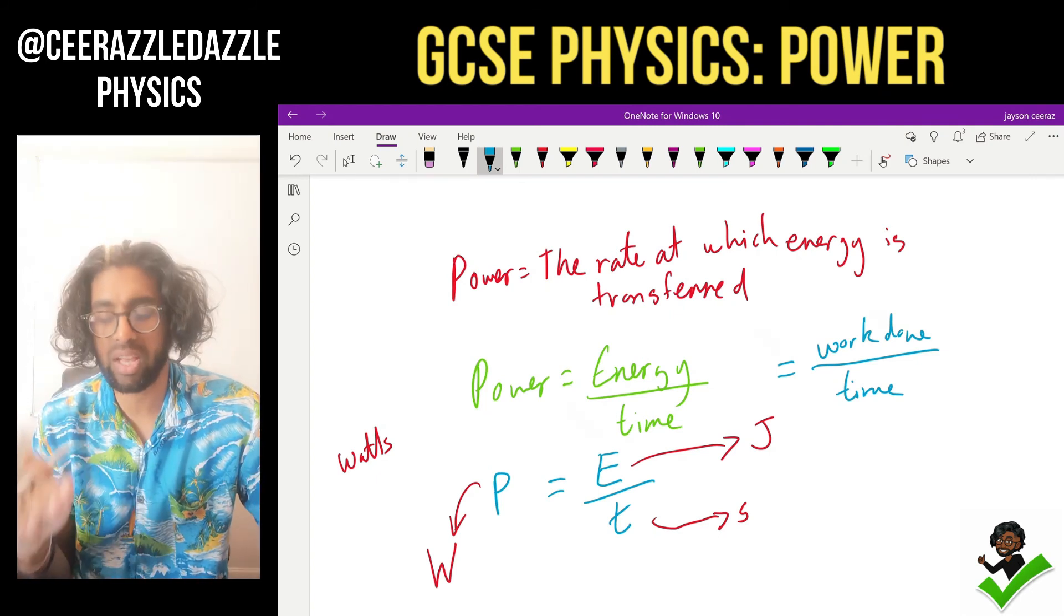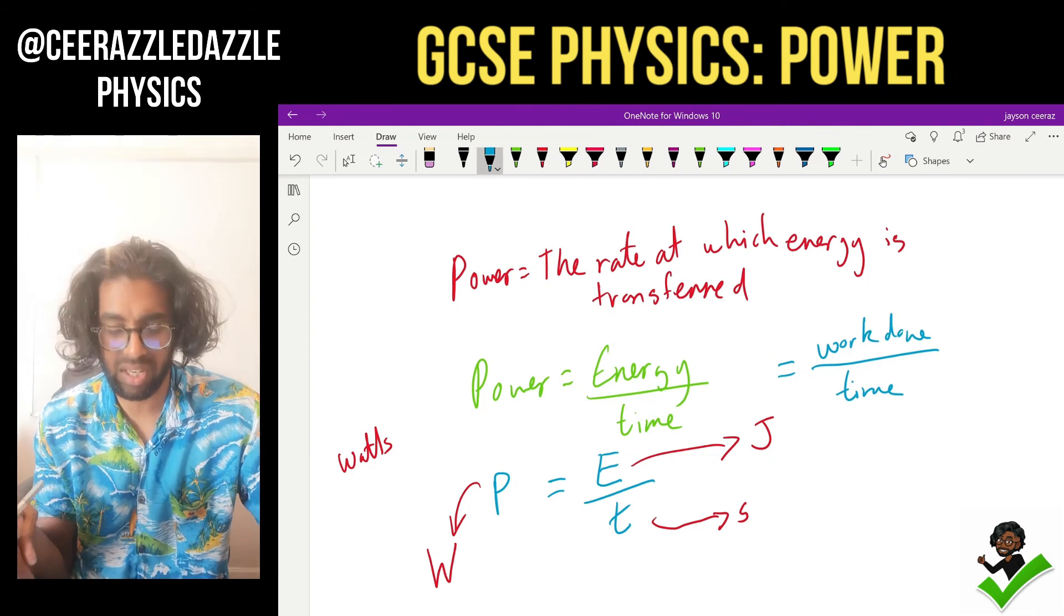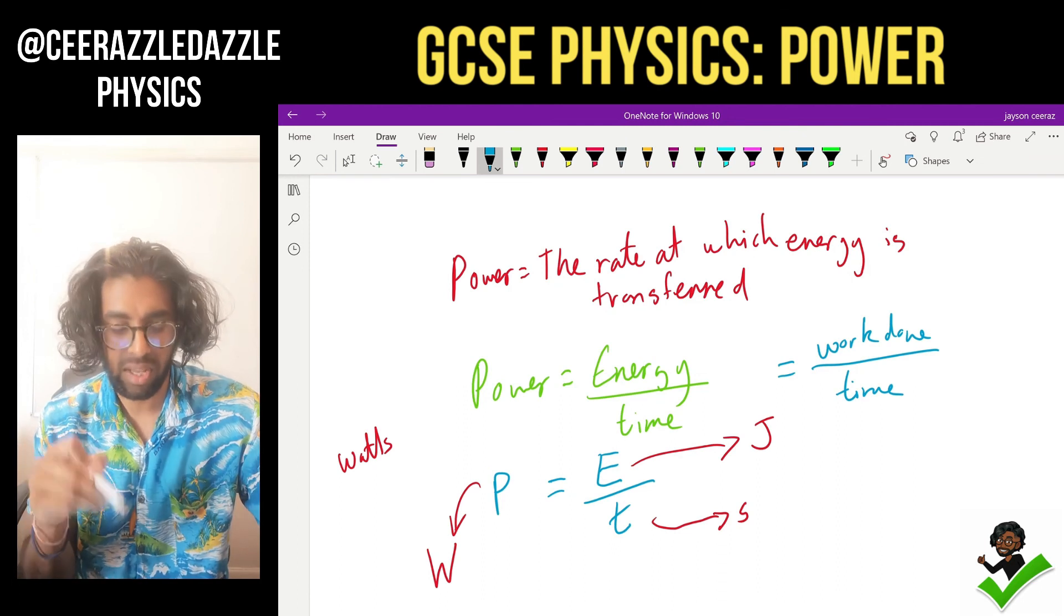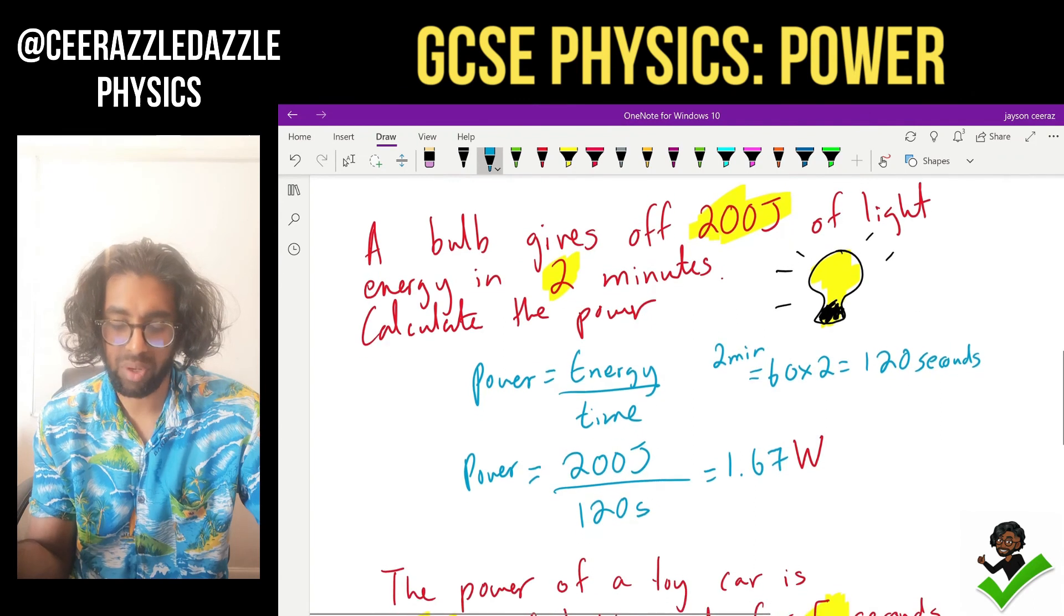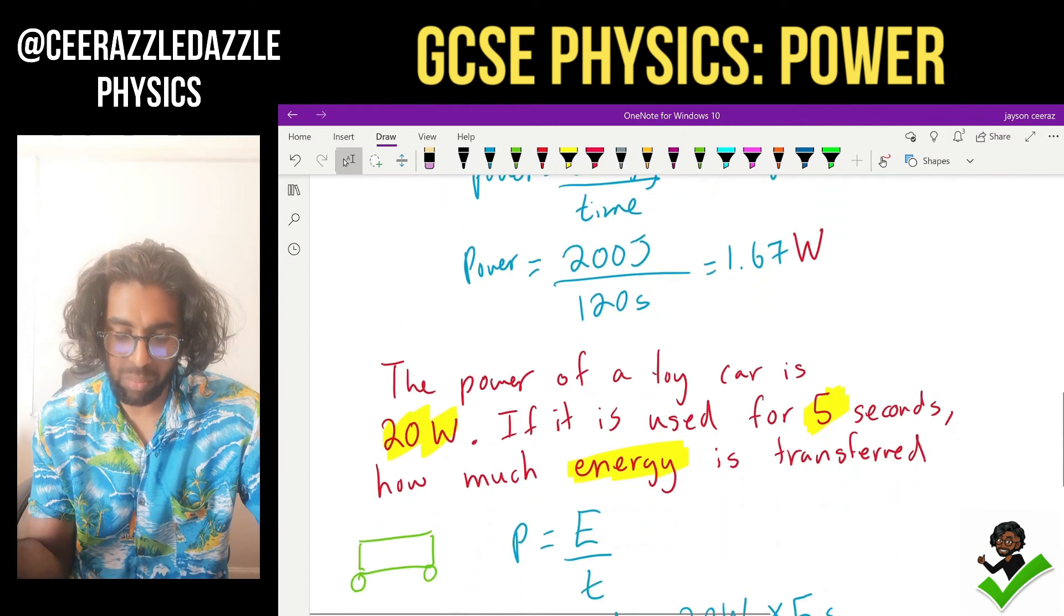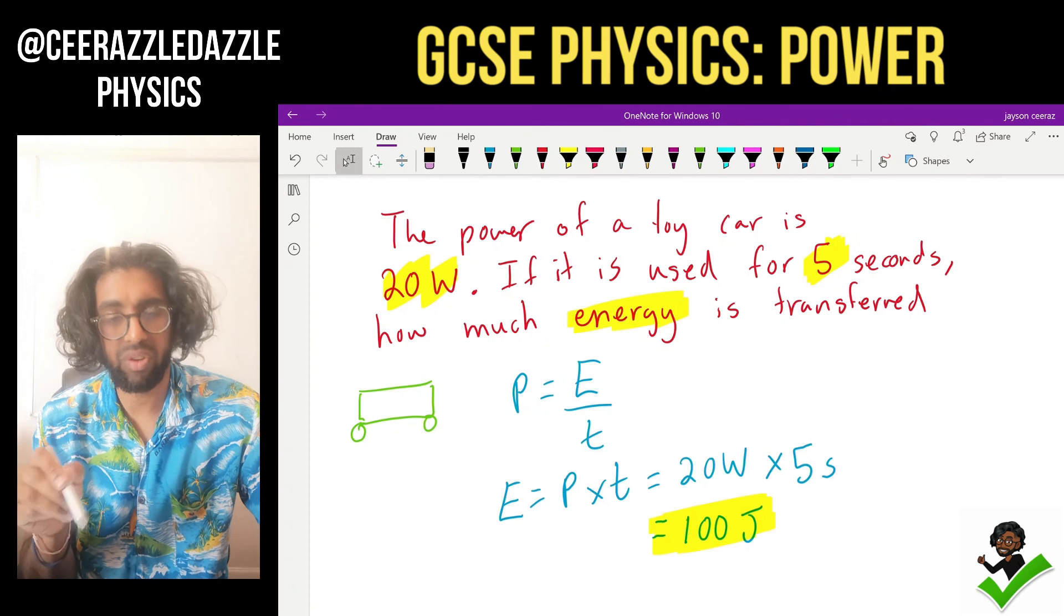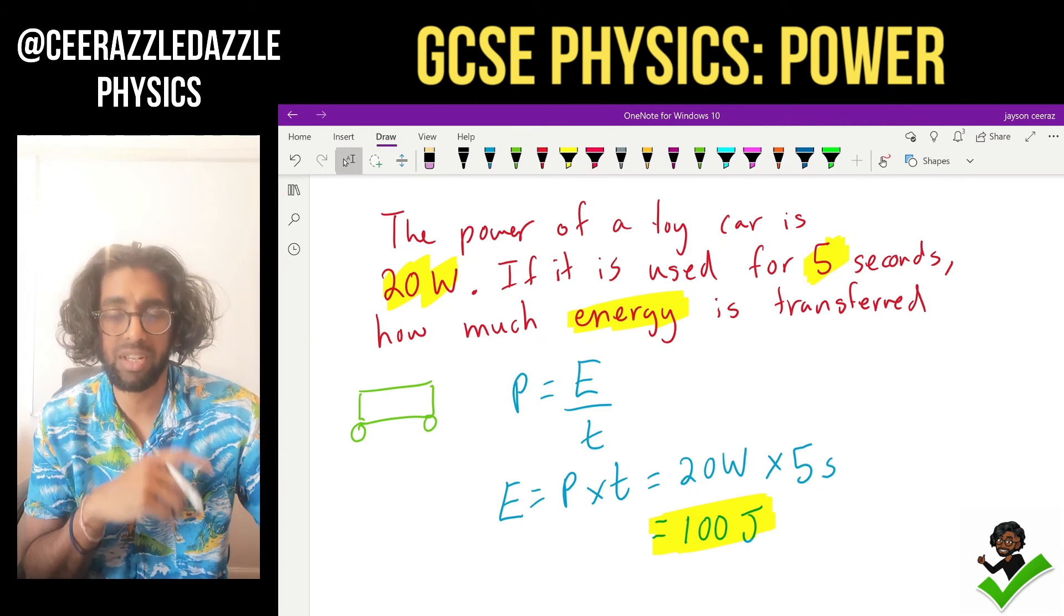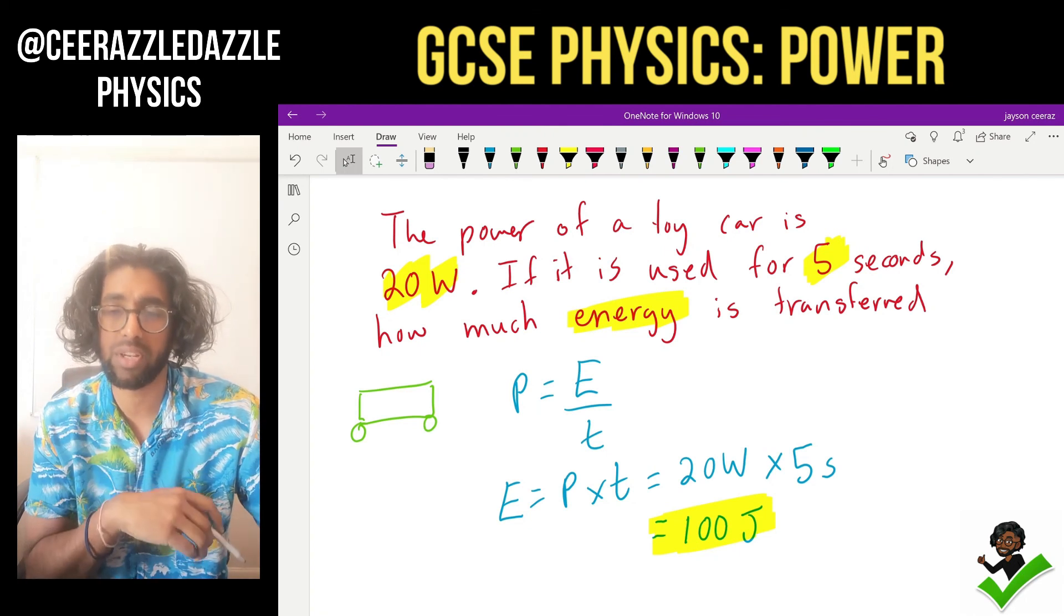Power is equal to the rate at which energy is transferred. P is equal to E divided by T, where energy is measured in joules, time in seconds, power in watts. Scrolling down is our first example, which is a simple calculation. We worked out the power of it, plugging them into the equation. Then we did one more example just to build up our confidence in which we had to rearrange the equation. And that's it for today's session. I shall see you next time for more cool physics. Don't forget to subscribe and like this video. Goodbye.